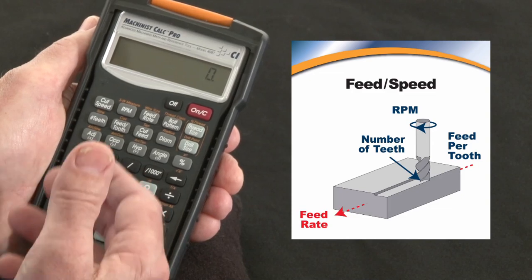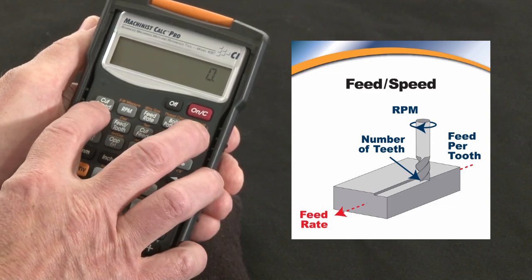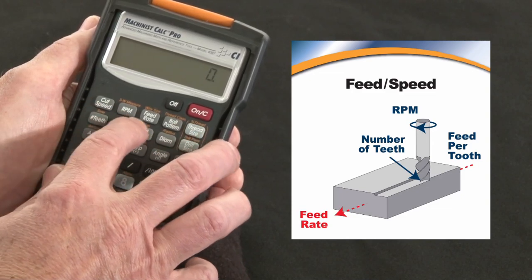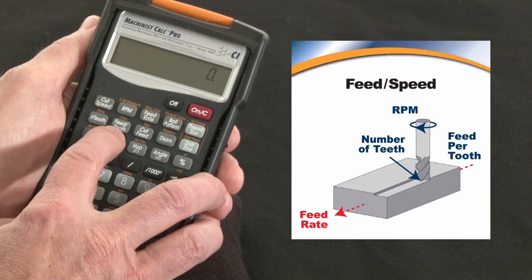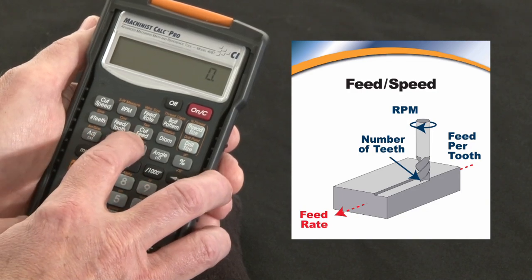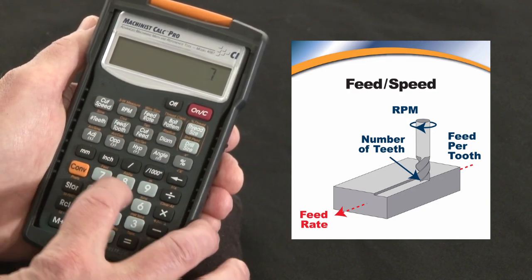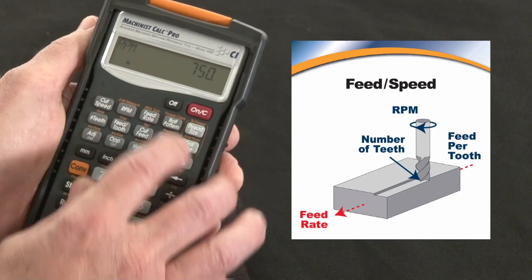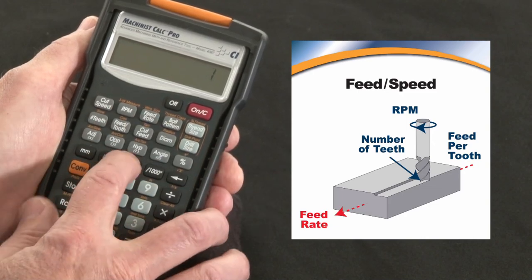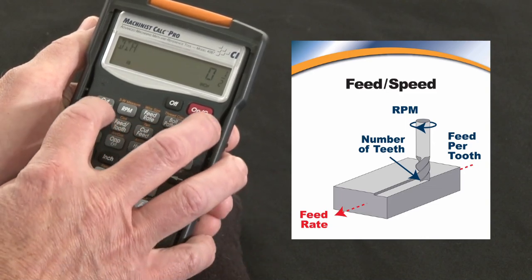You can use it for milling, drilling, or turning. You've got cut speeds, spindle speeds, feed rate - we can calculate chip load or feed per tooth and your cut feed. So let's say you're running at 750 RPM and you're using a half-inch diameter tool, what's your cut feed?